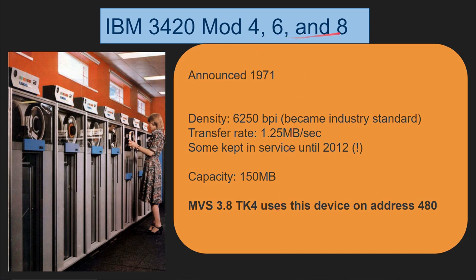Later IBM released models 4, 6, and 8, announced just a year later over time. The density was 6,250 bits per inch, which became the industry standard — almost every other manufacturer of tape drives eventually started to make tape drives with this density, which is important if you want to exchange tapes between computing architectures, say from a VMS computer to an IBM mainframe. The transfer rate was improved substantially to 1.25 megabytes per second. Some of those were kept in service until 2012 at a government facility. The capacity was 150 megabytes, which was the largest single dataset you could back up onto a tape drive without involving an application program.